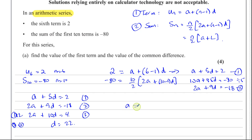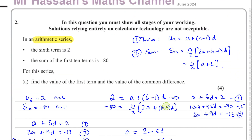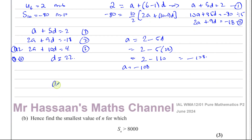So d equals 22. Now the first term: from a plus 5d equals 2, we get a equals 2 minus 5d, which is 2 minus 5 times 22, that's 2 minus 110, giving a equals negative 108. So the first term is negative 108 and the common difference is 22.